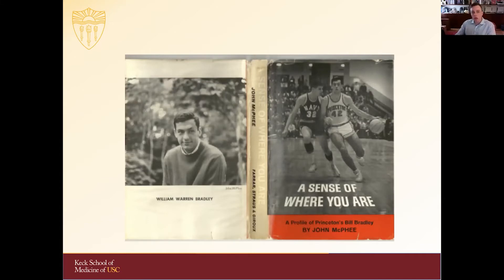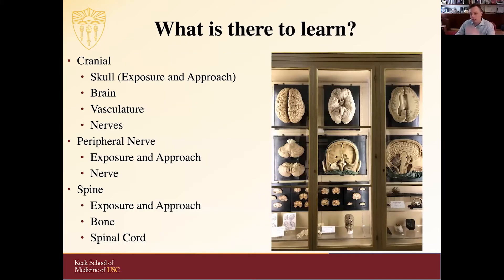So what is there to learn? Essentially everything. This is a picture from the University of Bologna, the oldest continually operating university. More than a thousand years ago they were founded, and they're still studying neuroanatomy there today. Going from cranial to peripheral nerve to spine, everything from exposure and approach to vital structures and related anatomy — this is an extremely vast topic. It's important to pick small bites and dive deeply into each small area.